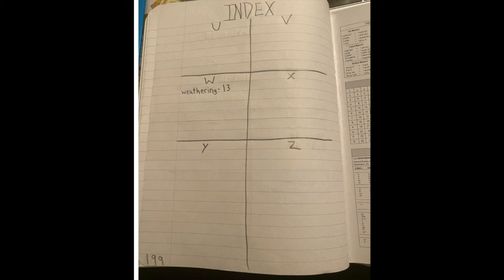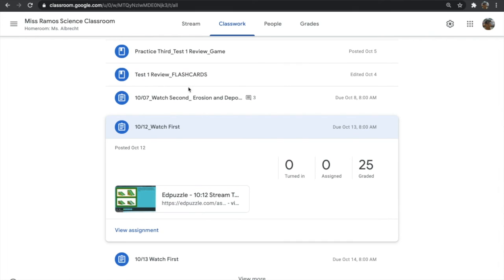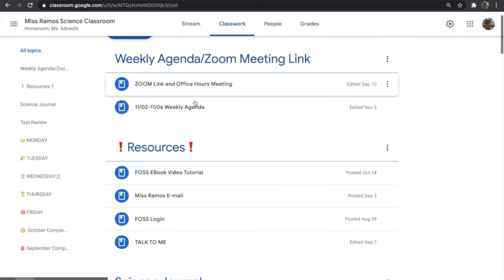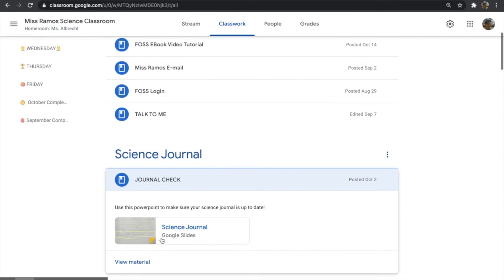Please make sure that your notebook is all updated with each page. If you need to go back onto our Google Classroom, you can just go to Classwork. And we see our weekly agenda, our resources. The third link down says Science Journal, and the only assignment there, it says Journal Check. You can click on this slide to make sure that you keep in check with your Science Journal.